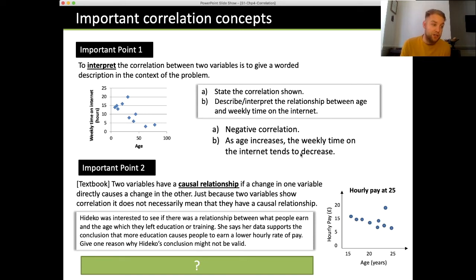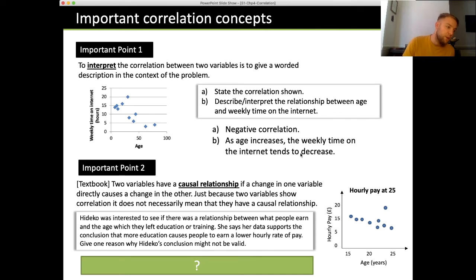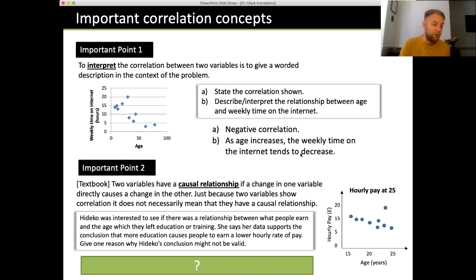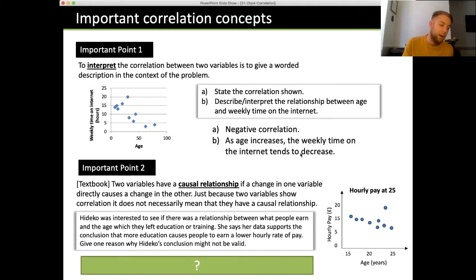Two variables have a causal relationship if a change in one variable directly causes a change in the other. Just because two variables show a correlation does not necessarily mean they have a causal relationship. Haideko was interested in whether there was a relationship between what people earn and the age at which they left education. She concluded that more education causes people to earn a lower hourly rate of pay. Give one reason why her conclusion might not be valid.